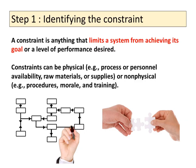Step 1: Identifying the constraint. A constraint is anything that limits a system from achieving its goal or a level of performance desired. Constraints can be physical, such as process or personnel availability, raw materials, or supplies, or non-physical, such as procedures, morale, and training.